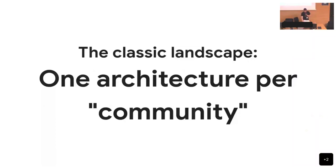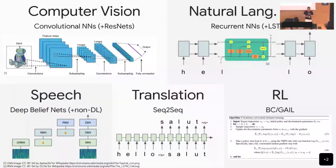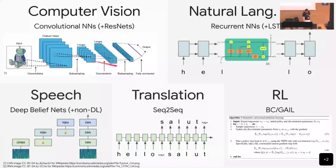First, the background you may have partially seen in the previous lecture. This is how it used to be in machine learning across different communities until a few years ago. You have these different communities — computer vision, natural language processing, speech, translation, and reinforcement learning — that for a long time were somewhat separate. Each developed their ideal deep learning architecture based on what makes sense for the data. In computer vision, CNNs arose because a robot hand looks the same whether it's bottom right or top left — it's translation equivariant.